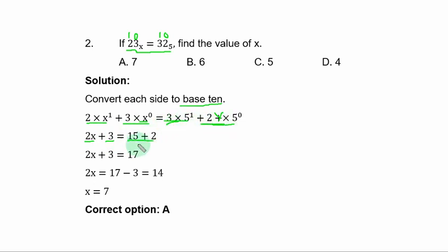If you add the like terms, you have 2x plus 3 equal to 17. Collect like terms, 2x is equal to 17 minus 3, and that is 14. Divide through by 2. x is equal to 7. A is the correct option.